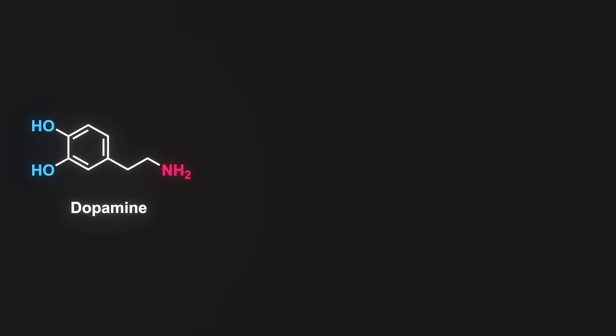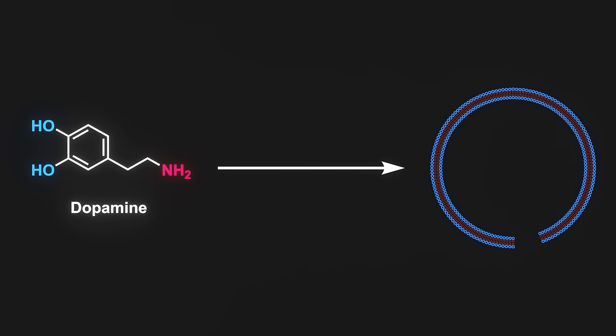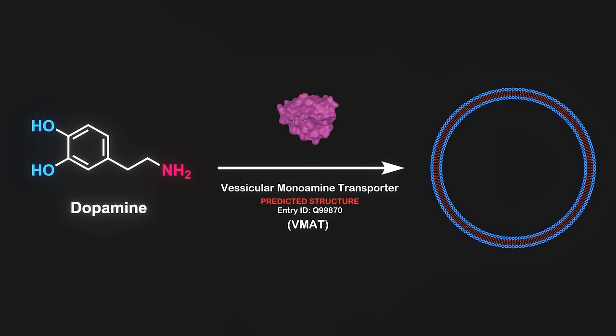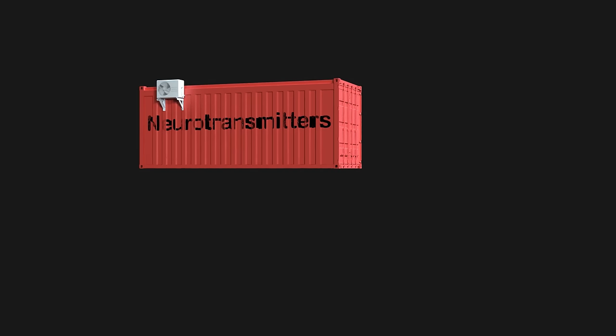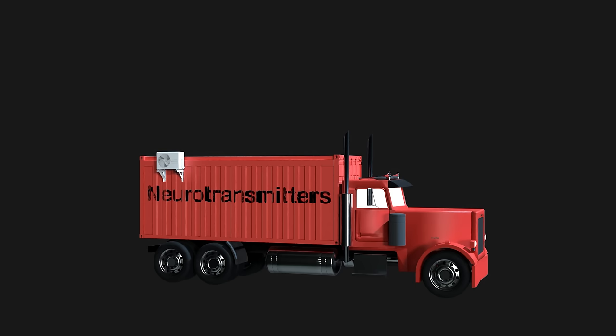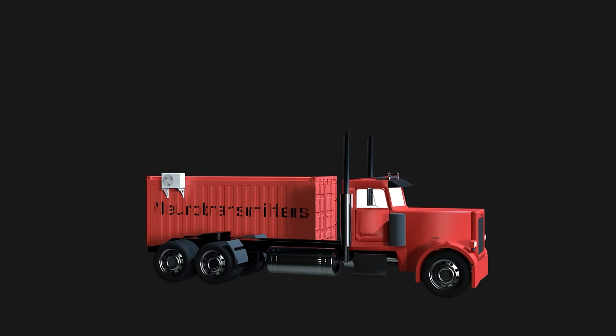When dopamine is synthesized in neurons, it gets transported into a vesicle through VMAT, which stands for vesicular monoamine transporter. If you're not sure what a vesicle is, a vesicle is a bit like a cargo container, and the proteins that move the vesicle are like the truck carrying the containers. Once the containers get to their destination, they're unloaded, and just like the real world, containers are often reused.